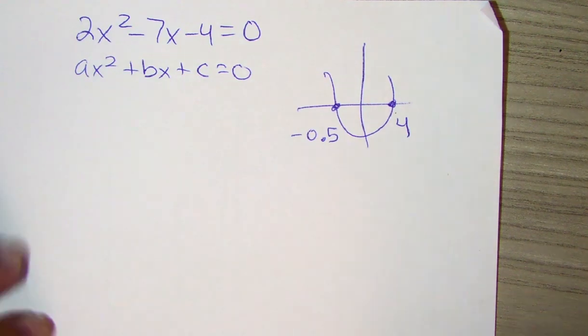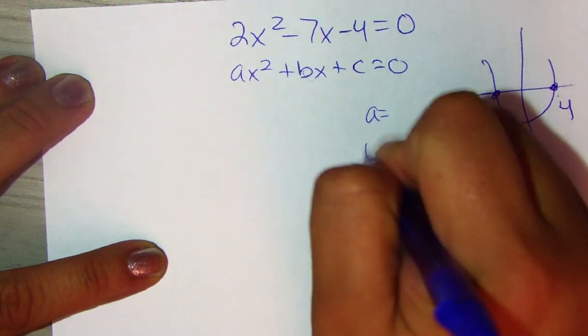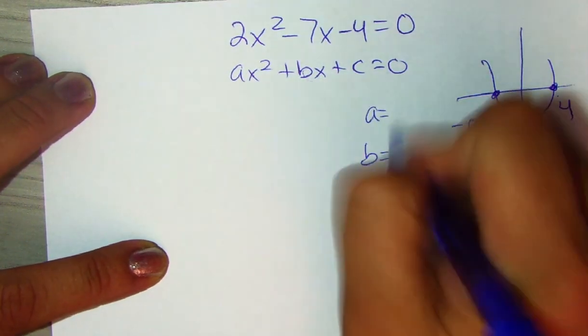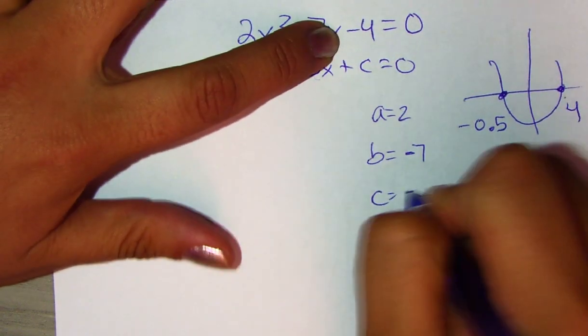But let's just do it algebraically if you also want to practice it. Just continue watching the video. So we're going to have a, b, and c. a is a 2, b is negative 7, and c is negative 4.